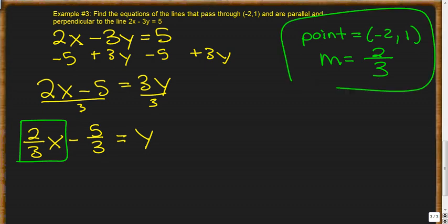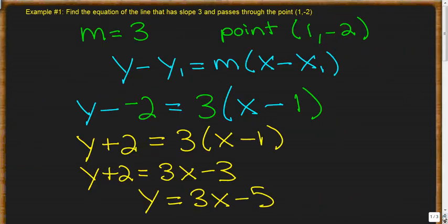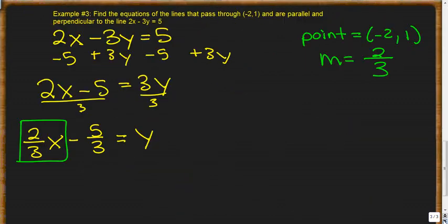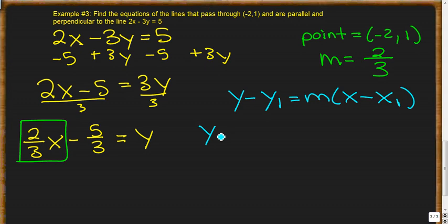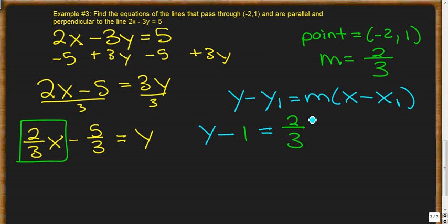Based on slope-intercept form, the slope is ⅔ — the number attached to x. Since I have my point and my slope, I can now use the point-slope formula. Plugging in: y minus y1 (which is 1) equals ⅔ times x minus x1 (which is -2).